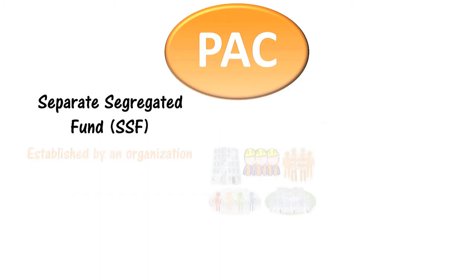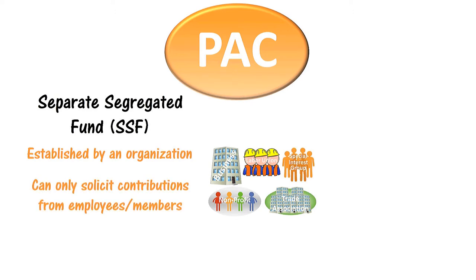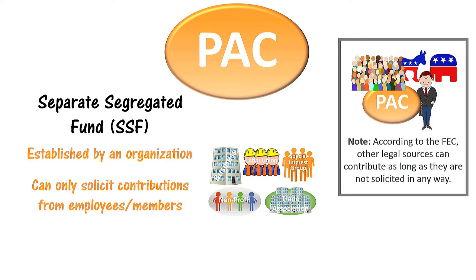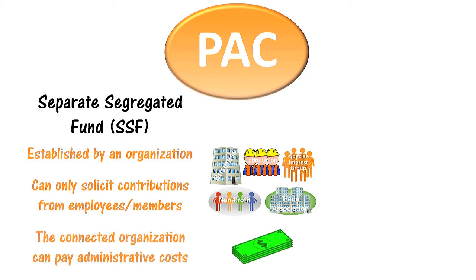The FEC designates two types of PACs. A separate segregated fund is established by an organization, and this type of PAC can only solicit contributions from the organization's employees or members. Others can also contribute as long as they are not solicited. The organization connected to the PAC cannot contribute its own money, but it can provide financial support for administrative and fundraising costs.